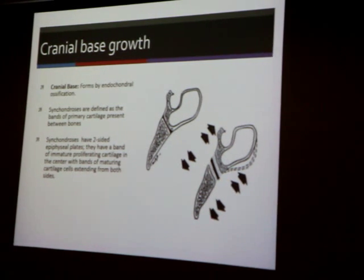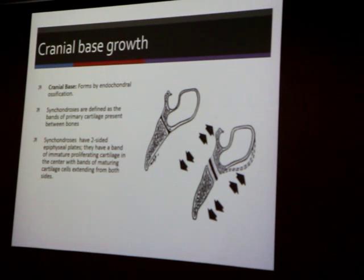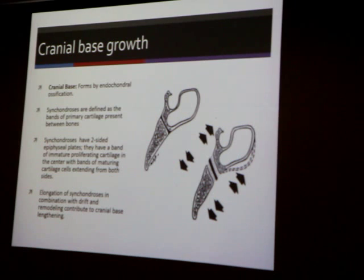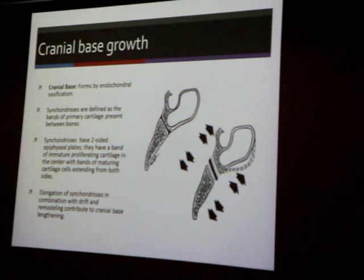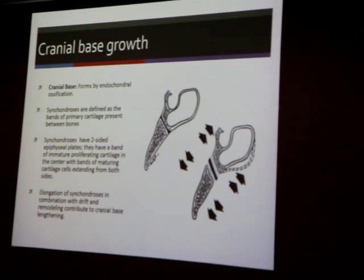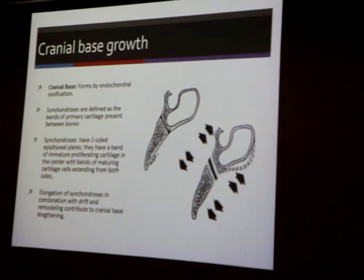Elongation of the synchondrosis in combination with drift and remodeling — these three mechanisms of growth, drifting, remodeling, and suture growth, happen at the same time. The elongation happens, the cranial base gets expanded, and at the same time there is remodeling going on, and new bone is added to the suture between the two bones in the cranial base. When we study them, we study them as separate mechanisms, but they all go at the same time, at different places.